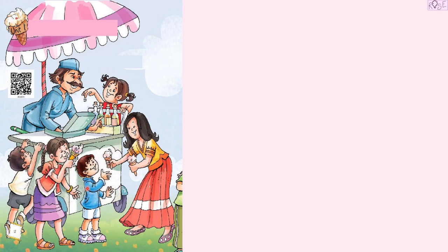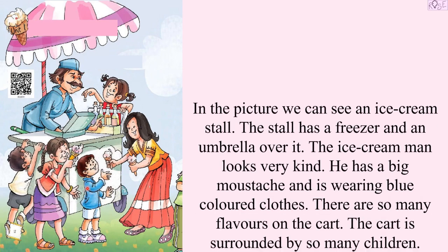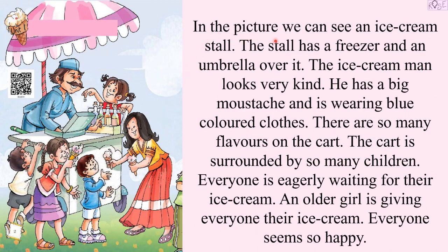Now let's write a full passage on the picture. In the picture, we can see an ice cream stall. The stall has a freezer and an umbrella over it. The ice cream man looks very kind — he is smiling and speaking to every child about what they would like to have. He has a big mustache and is wearing blue colored clothes.